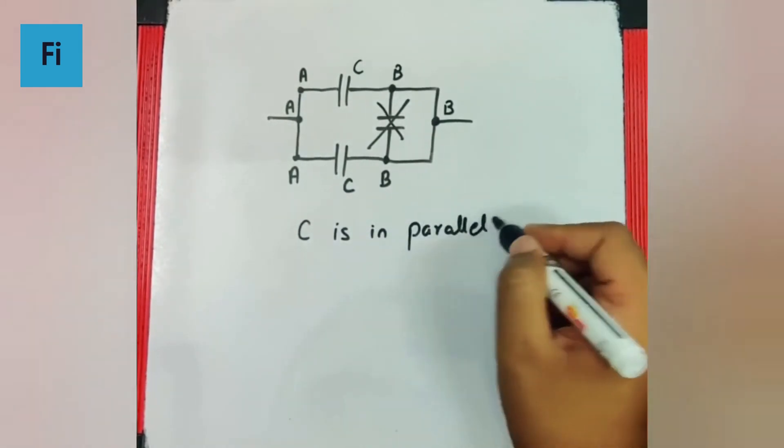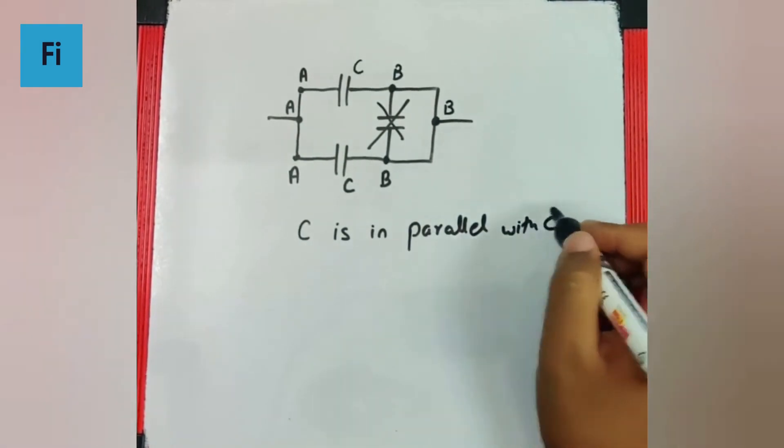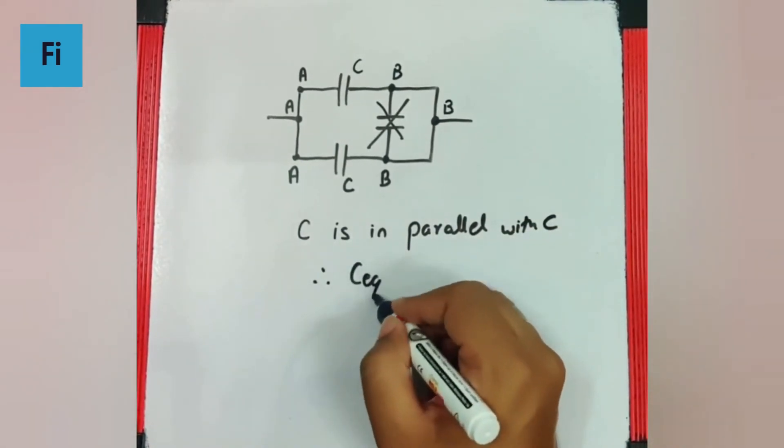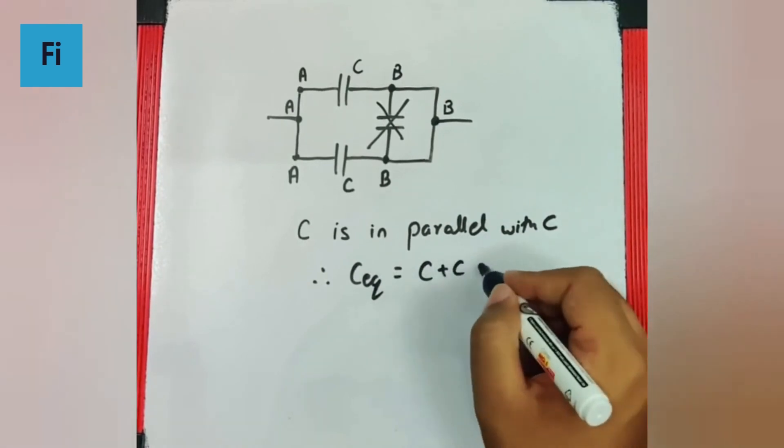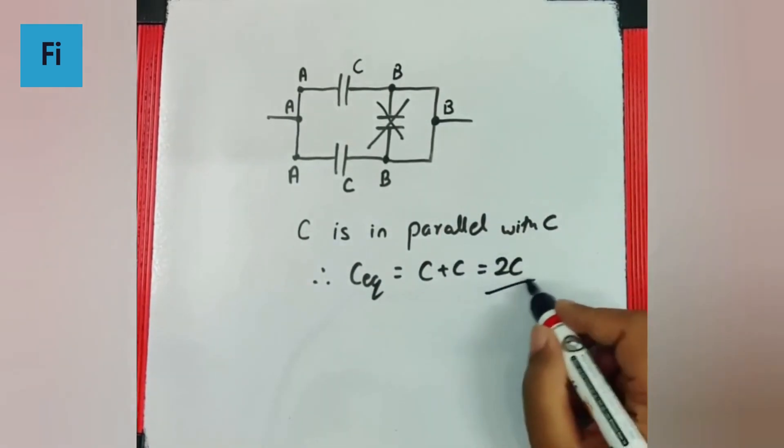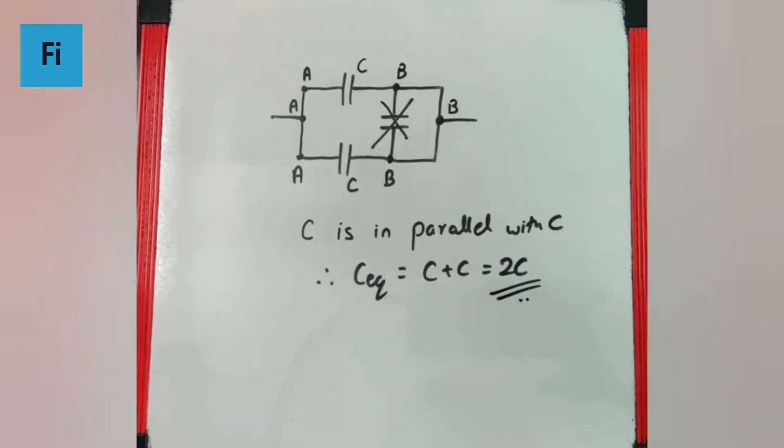Yani humara C equivalent hoga C plus C, so 2C, and that is going to be our final answer.